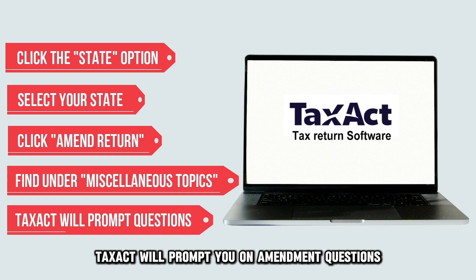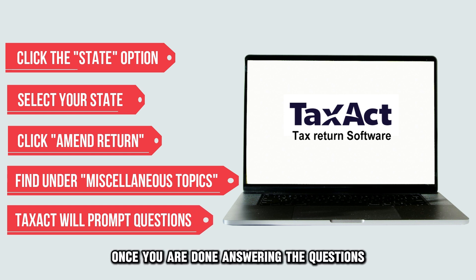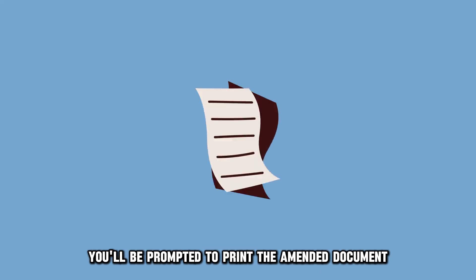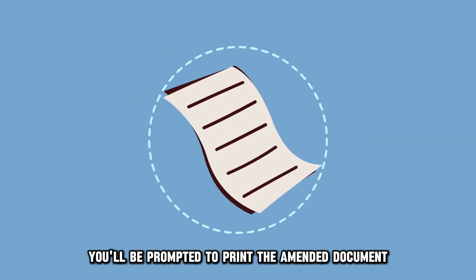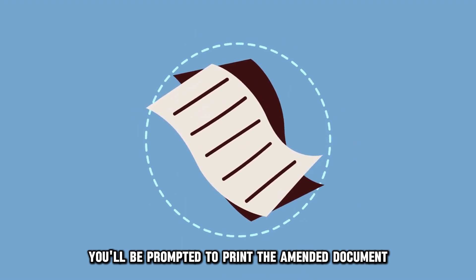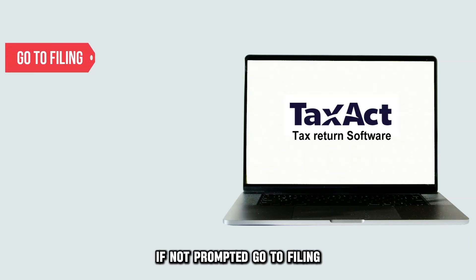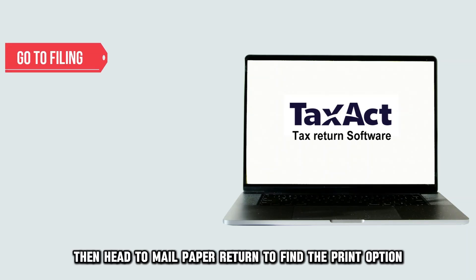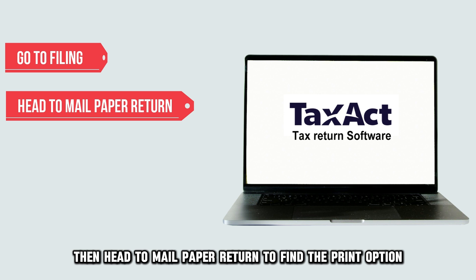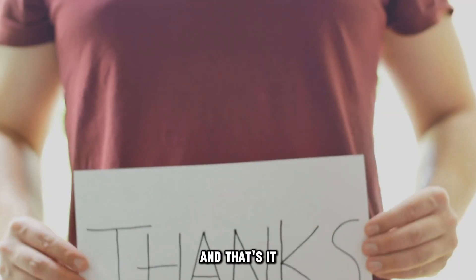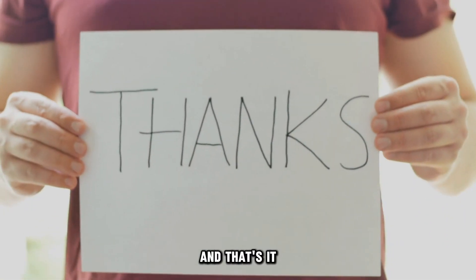TaxAct will prompt you on amendment questions. Once you're done answering the questions, you'll be prompted to print the amended document. If not prompted, go to Filing, then head to Mail Paper Return to find the print option. And that's it.